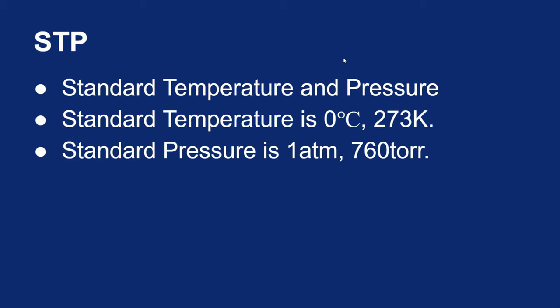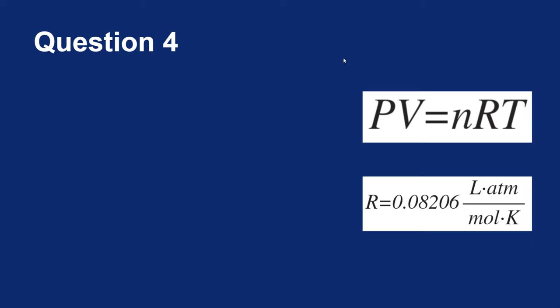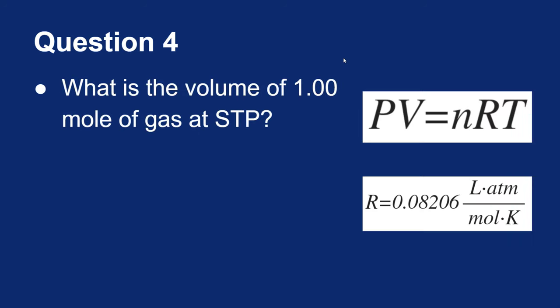Standard pressure, as we would expect, is one atmospheric pressure, or 760 Torr. So I want to use the ideal gas law to figure out what the volume of one mole of gas will be at STP, at standard temperature and pressure.